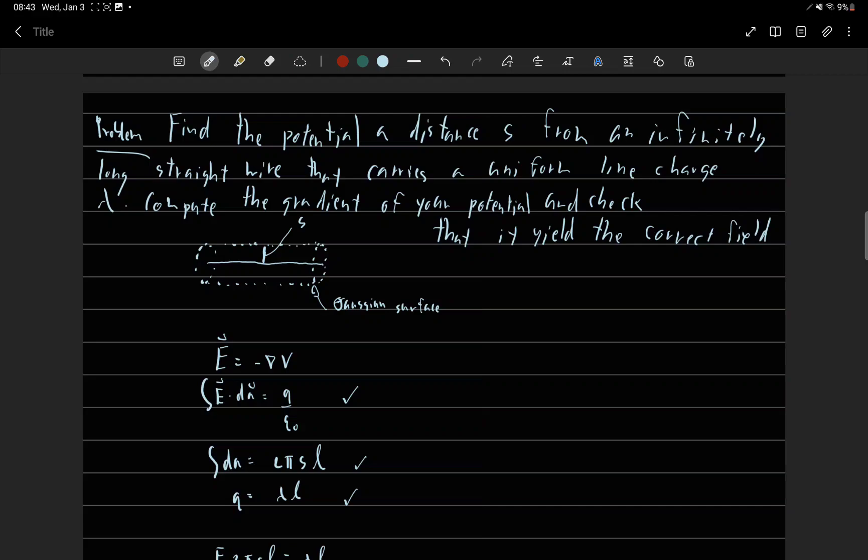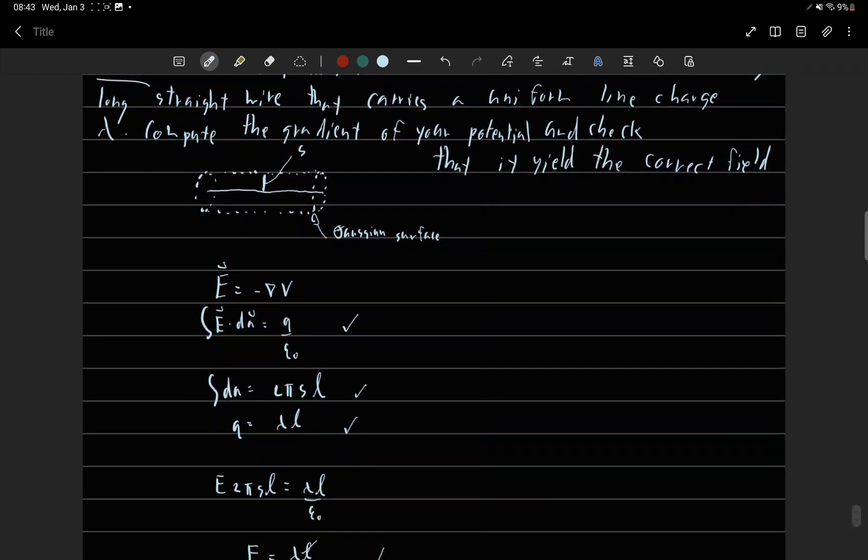So we have to draw a diagram and create a Gaussian surface. Then to find potential we must first find the electric field from Gauss's law.